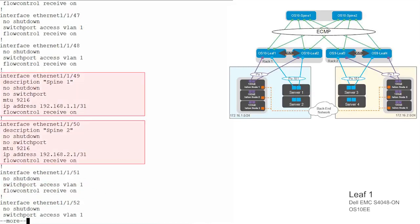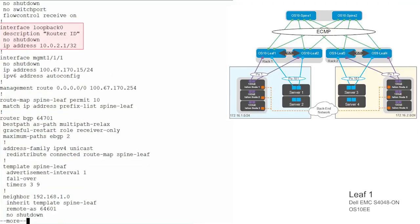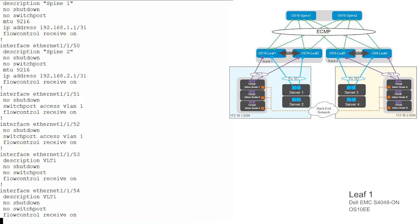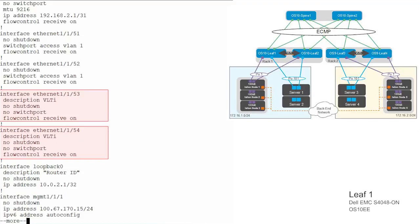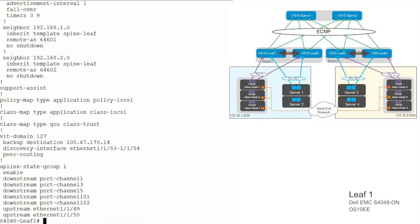Configure point-to-point ports 49 and 50 connected to the spine by assigning the IP address. Configure a loopback address, which will be used as a router ID while configuring BGP. Ports 53 and 54 are used for VLT interconnect between S4048 leaf 1 and S4048 leaf 2 switches. Create VLT domain 127, add the backup destination, add ports 53 and 54, and enable VLT peer routing on each switch.